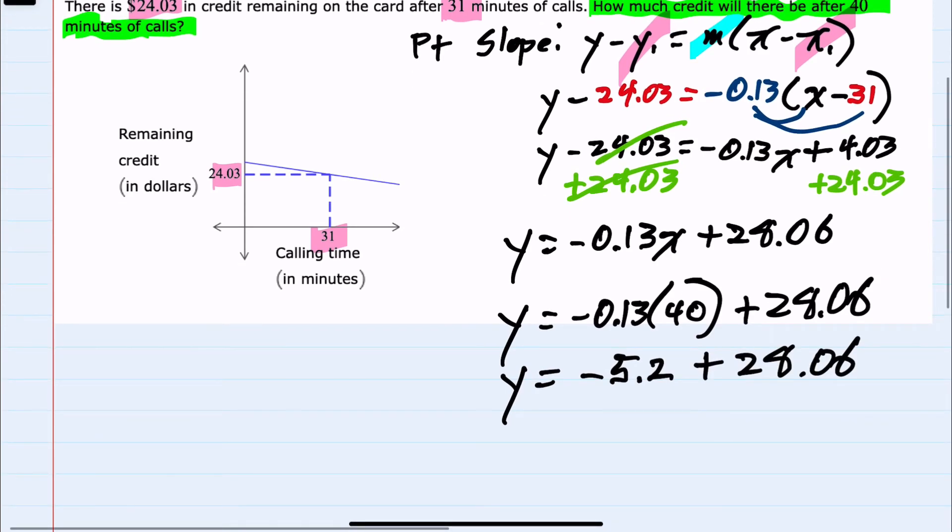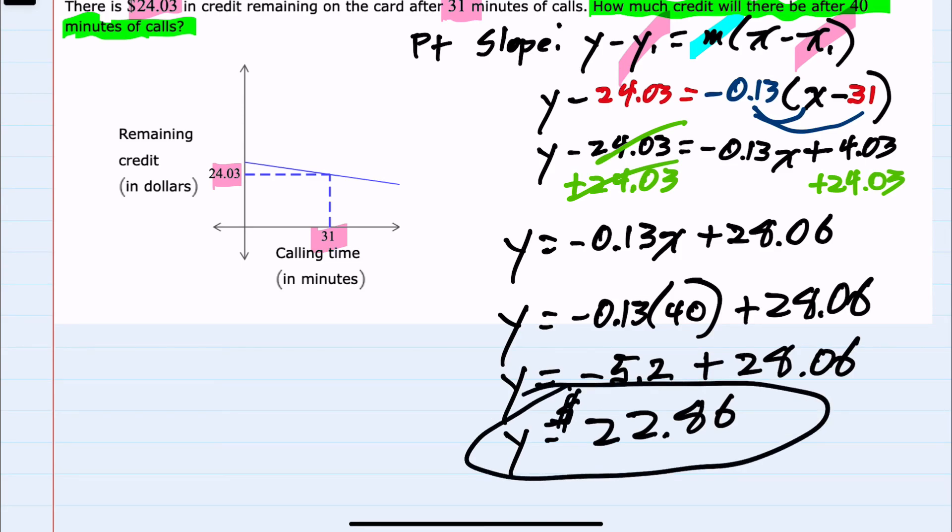And then lastly, combining those like terms, we have 22.86. So after 40 minutes of phone calls, there would be $22.86 left on the calling card.